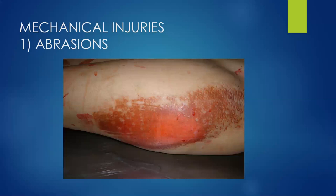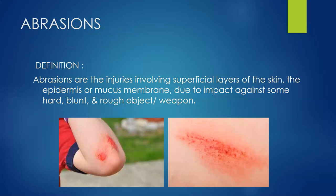Now we will study the commonest type of mechanical injury — abrasion. Abrasion is defined as injuries involving superficial layers of skin, the epidermis or mucous membrane, caused by the impact against some hard, blunt, and rough object or weapon.